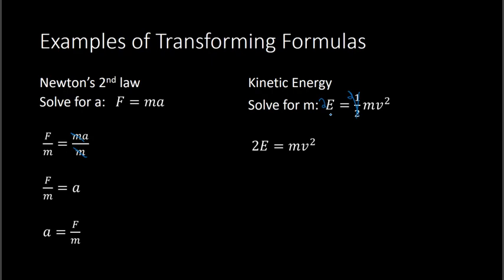From here, we just need to get rid of the v-squared. This says m times v-squared, so to get rid of v-squared I do the opposite, which is divide. I divide both sides by v-squared. When I do that, the v-squareds on the right cancel, and I'm left with m on the right side and 2E over v-squared on the left. So m equals 2 times E over v-squared. If I wanted to solve for the mass, I take 2 times the energy divided by the velocity squared.